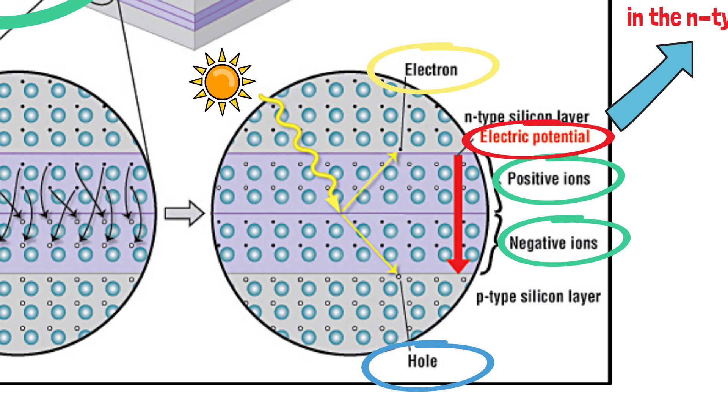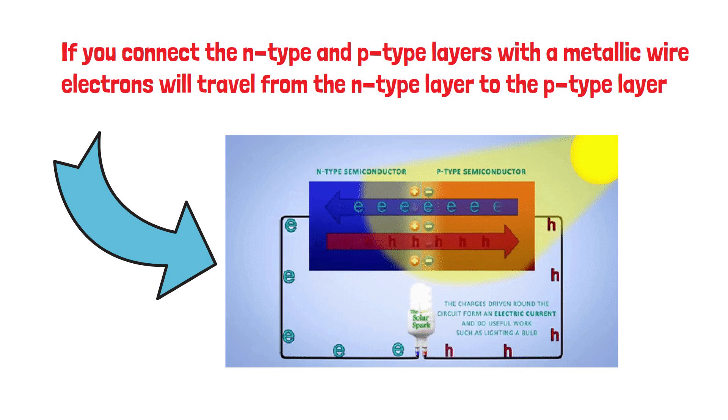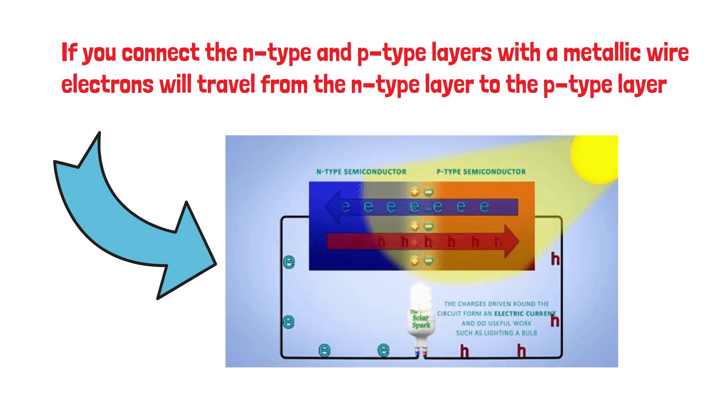If you connect the n-type and p-type layers with a metallic wire, electrons will travel from the n-type layer to the p-type layer by crossing the depletion zone and then go through the external wire back to the n-type layer, creating a flow of electricity.